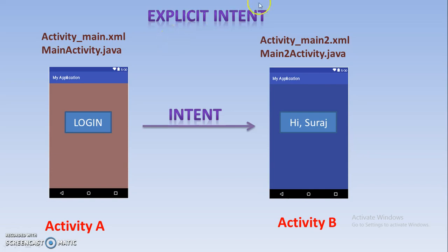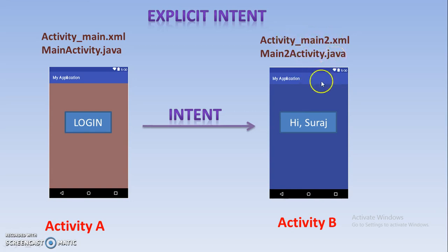First we will see what exactly explicit intent is. Suppose in your application you have created one activity. Whenever you start Android Studio, by default one activity is present, and it is created using an XML and Java file. Suppose you want to add one more activity in your application — for creating the second activity you also have to use an XML and Java file. So in your complete application there are two activities, first and second, both present in the same application. Moving from one activity to another within the same application using intent is known as explicit intent.